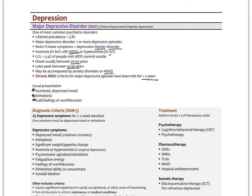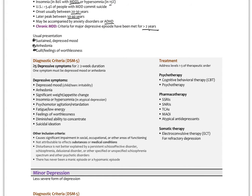The DSM-5 defines major depression as having five or more depressive symptoms for two or more weeks, with one symptom being depressed mood or anhedonia. Symptoms include: depressed mood, anhedonia, significant weight or appetite change, insomnia or hypersomnia, psychomotor agitation or retardation, fatigue or low energy, feelings of worthlessness, diminished ability to concentrate, and suicidal ideation. The episode must cause significant impairment in social, occupational, or other functioning.